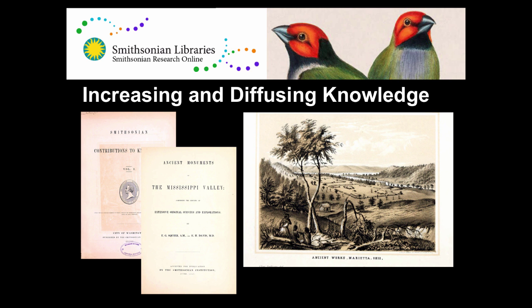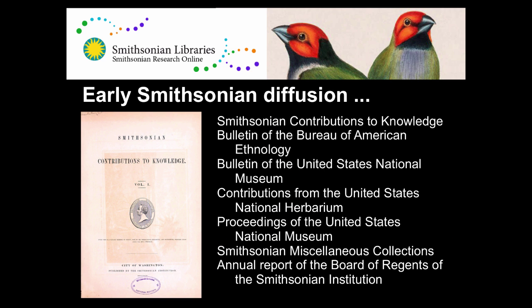From the very beginning, the Smithsonian was focused on publishing the outcomes of research. The very first Smithsonian publication was in a series called Smithsonian Contributions to Knowledge, and it was on the mounds of the central Midwest area — the outcome of research done on the early burial mounds and other archaeological sites. Over the years, a number of other Smithsonian publications followed, many published by the Government Printing Office, making them actual federal documents — so all of the complications that go with federal documents accrue to these publications.